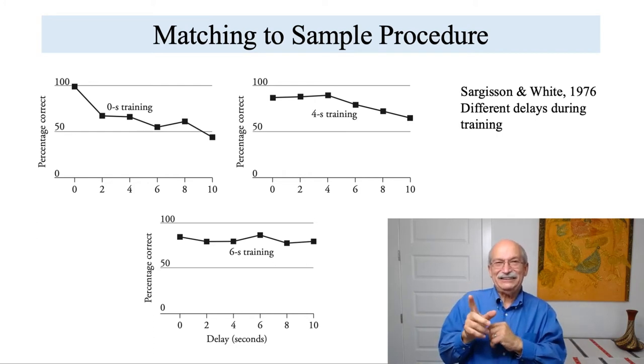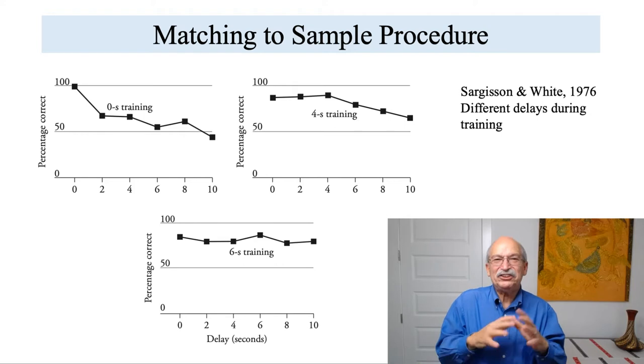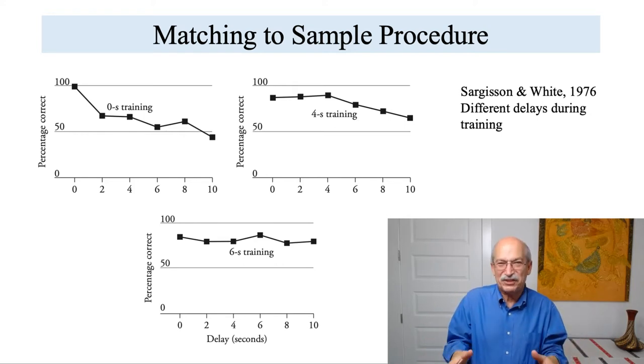That conclusion comes from experiments that are called directed forgetting experiments. The directed forgetting paradigm was first developed in studies of memory with human participants, in which human participants were given a list of things to remember. And after each item, they either got the letter R, which told them, hey, you're going to be tested on this item, so you better remember it. Or they got the letter F, which told them you're going to forget this item, you're not going to be tested on it. So some items were followed by remember cues and other items were followed by forget cues.